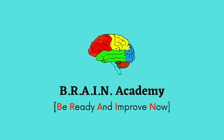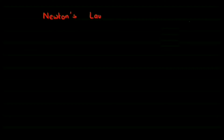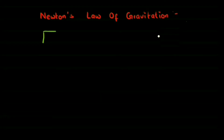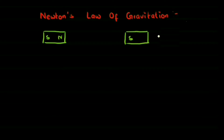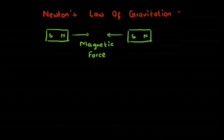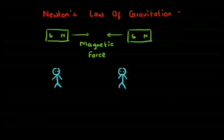Welcome to Brain Academy. In this video we are going to be looking at Newton's law of gravitation. To understand this law let us look at two magnets. These two magnets attract each other with magnetic force. Similarly, what Newton says is all the objects in the universe, even humans, attract each other with a special kind of force which is gravitational force.